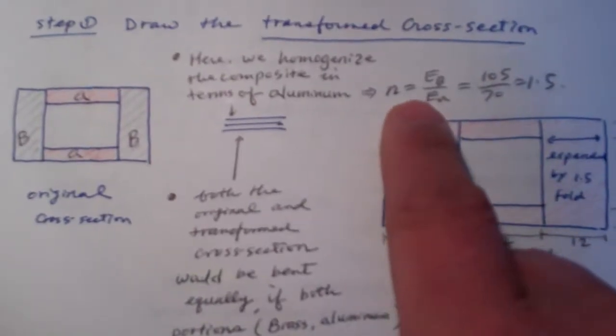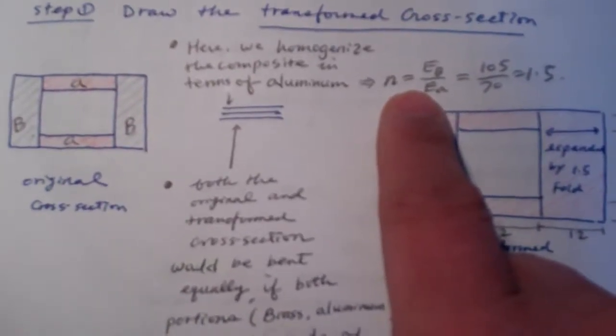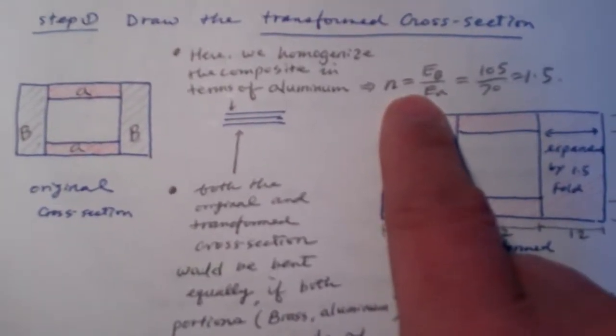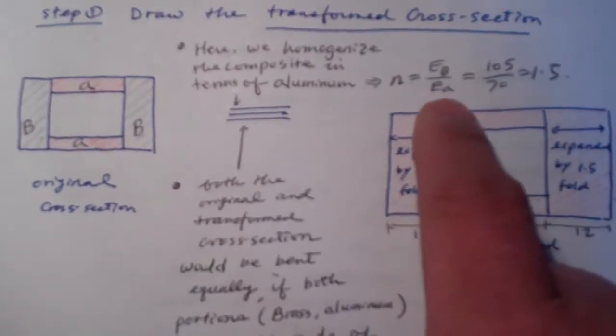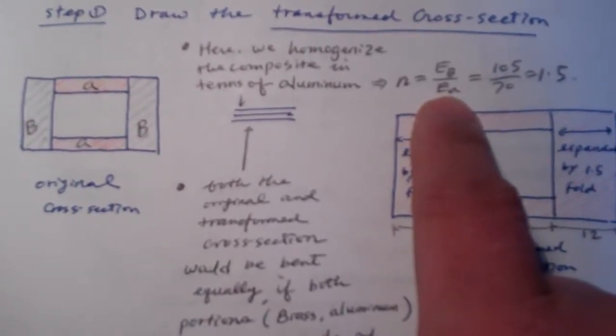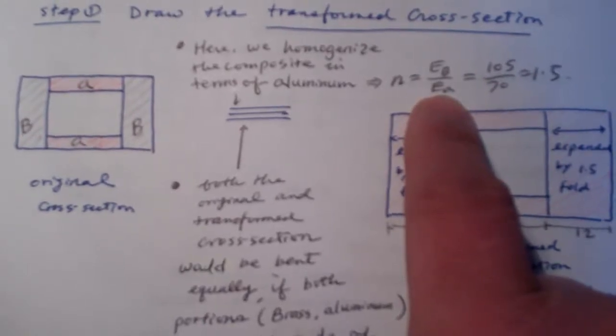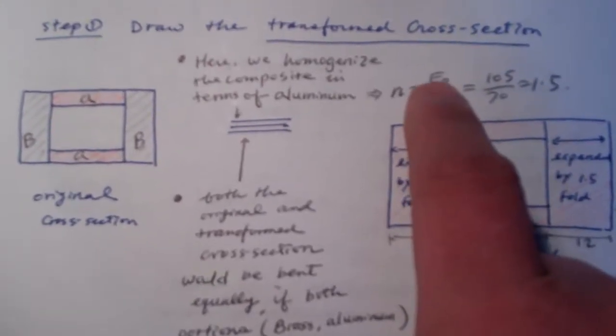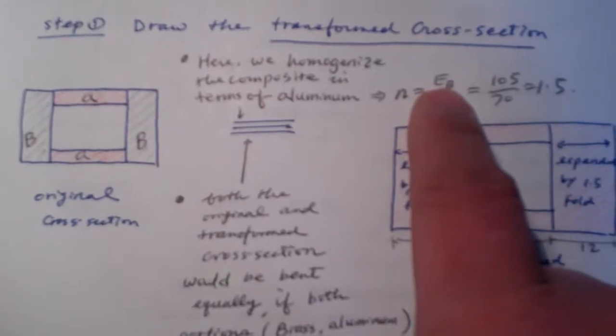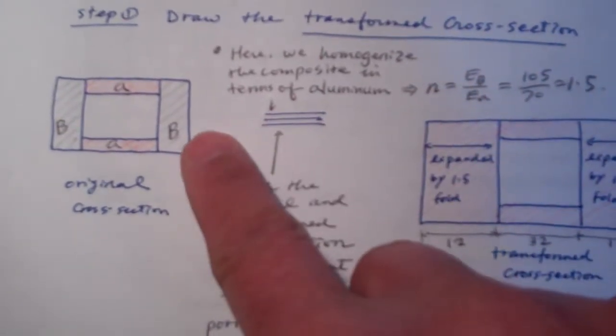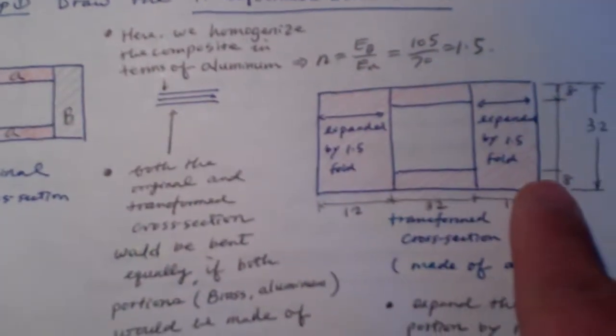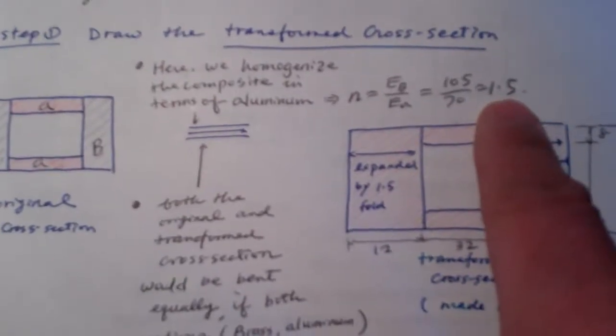By doing so, we pick the scalar ratio, that is n, obtained by dividing by the Young's modulus of the homogenized material, which is aluminum. And the numerator is the brass, which is to be transformed. So we obtain the ratio is 1.5.